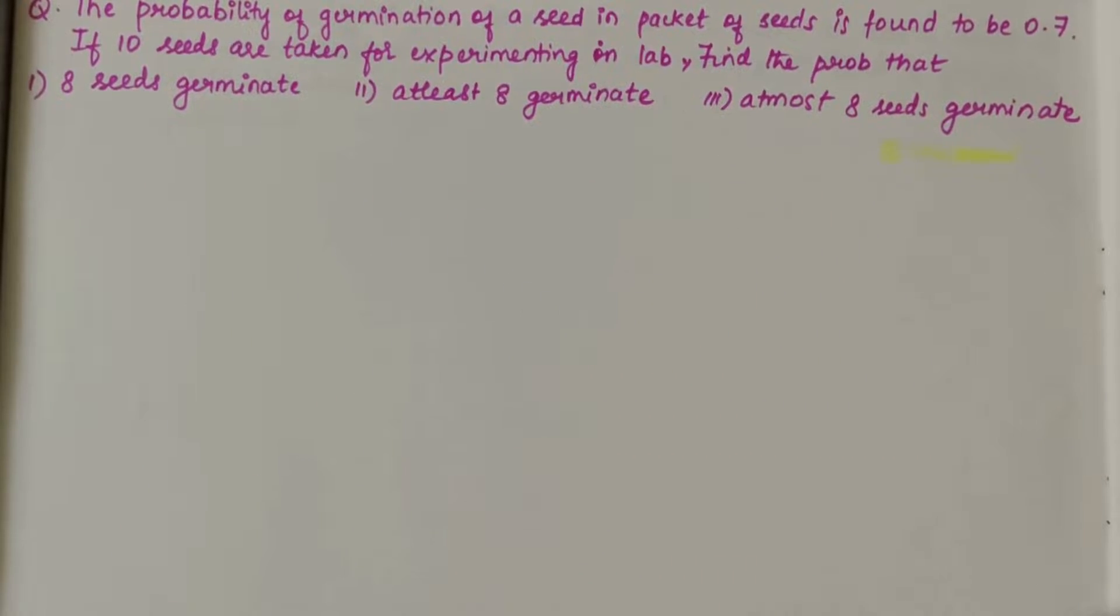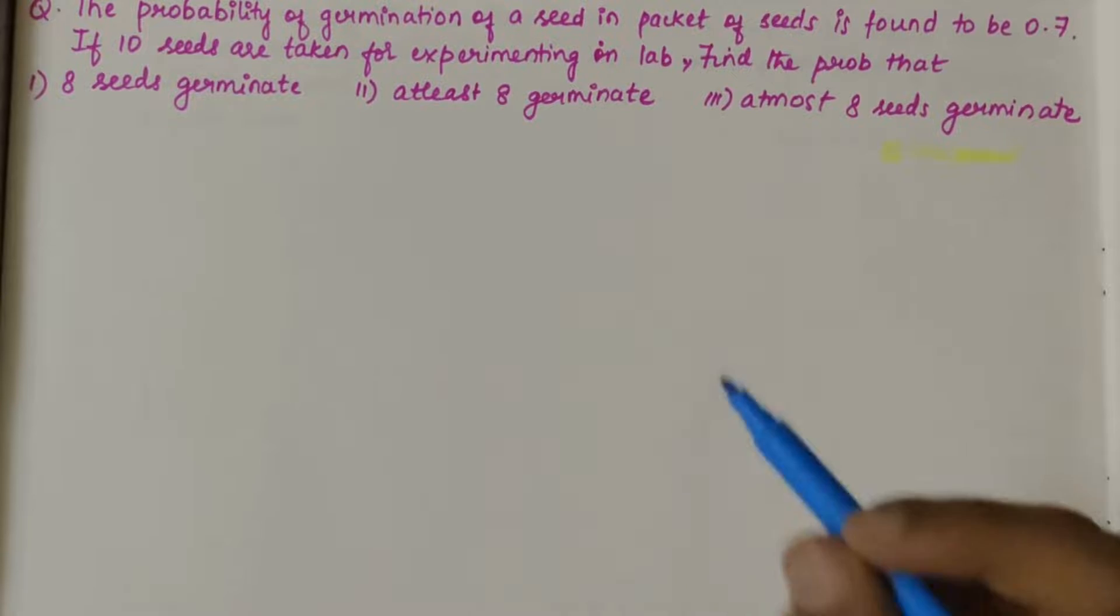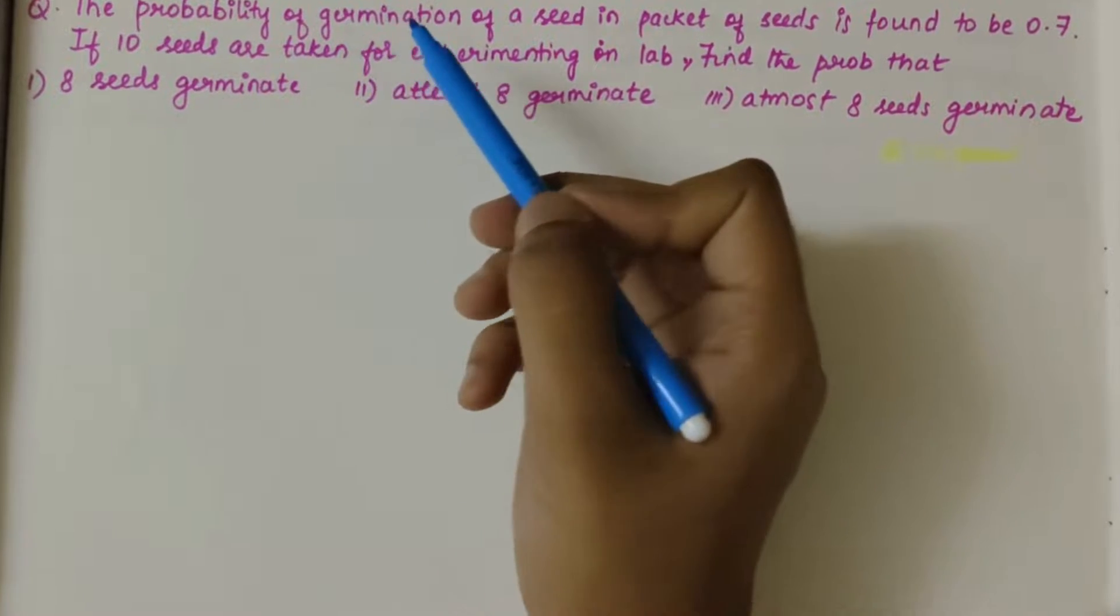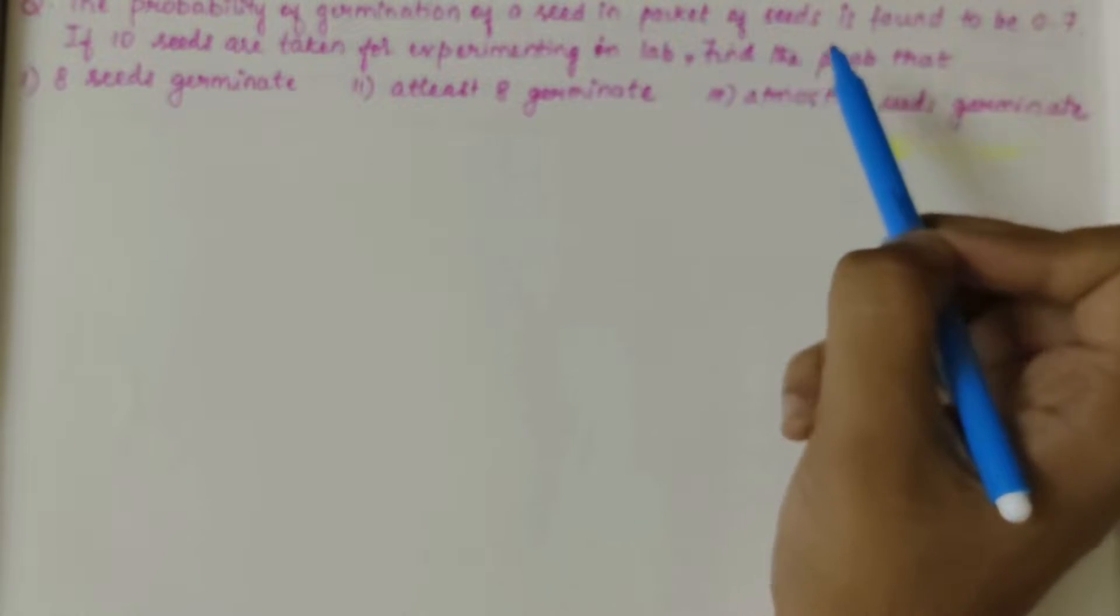In this video, we'll be solving a numerical related to binomial distribution. The problem statement is: the probability of germination of a seed in a packet of seeds is found to be 0.7. If 10 seeds are taken, so n value is 10.